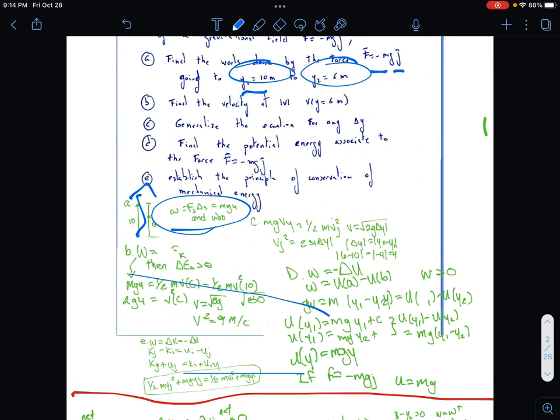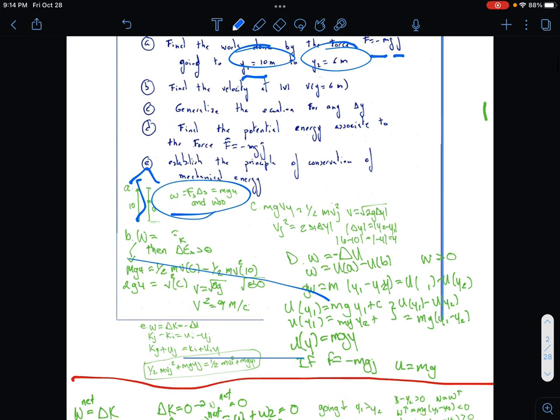Find the velocity - we're going to go ahead and just plug in everything that we already have. We have mg times 4 equals half m times v squared, parentheses g minus y2 mv squared, 10.